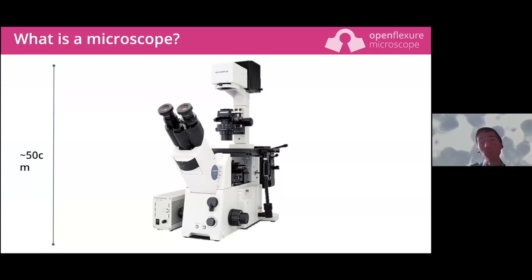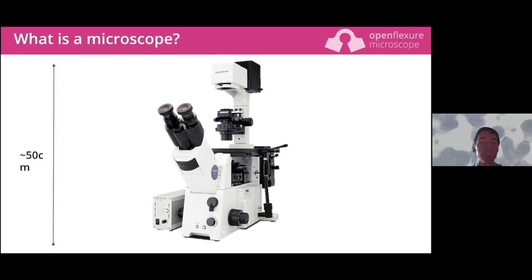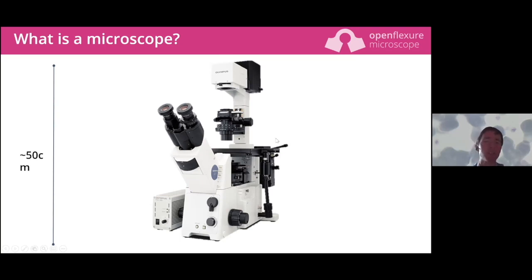Even more basic than why everyone needs a microscope - let's think about what a microscope is. Here's a picture of a lab microscope you might find in a typical research lab. It's quite a big beast and quite an expensive item - probably £20,000 plus of microscope, and that's before you've added the automated stage.